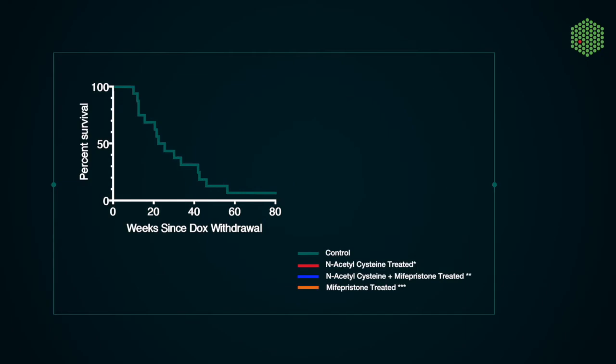At the end of the day, we wanted to know if this is actually functional. So we decided to interfere with these traits using two approaches. Both of these approaches had success. We could attenuate substantially the relapse formation by using a scavenger, and we could actually abrogate relapses in around 70% of our animals when we stopped proliferation in the mammary gland.